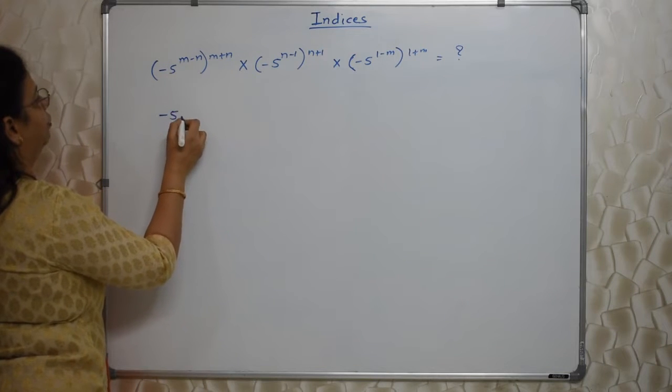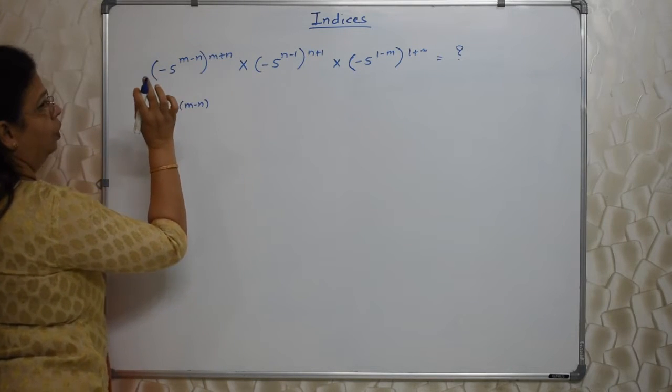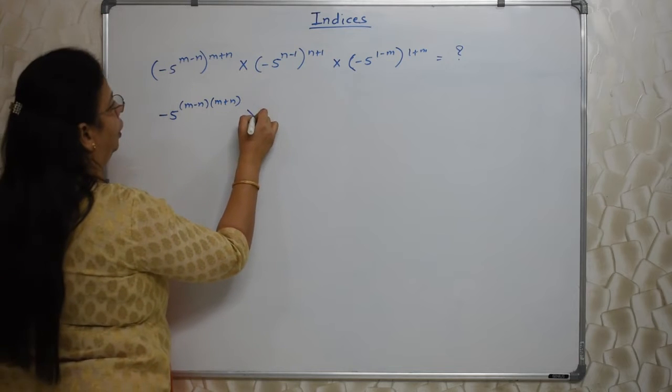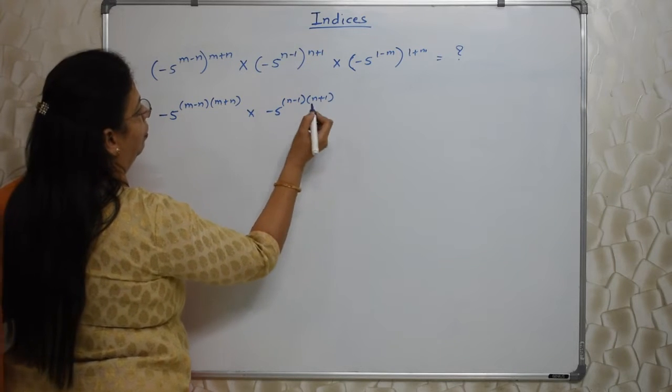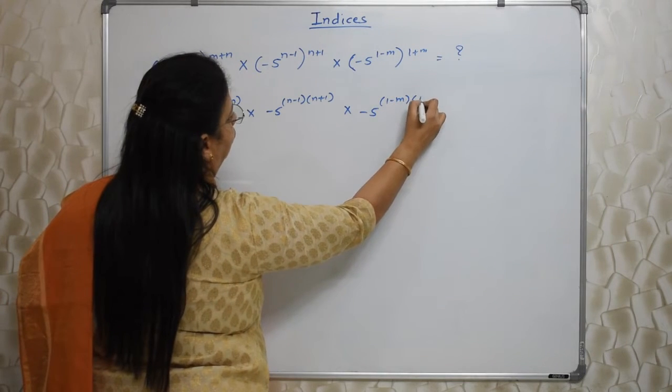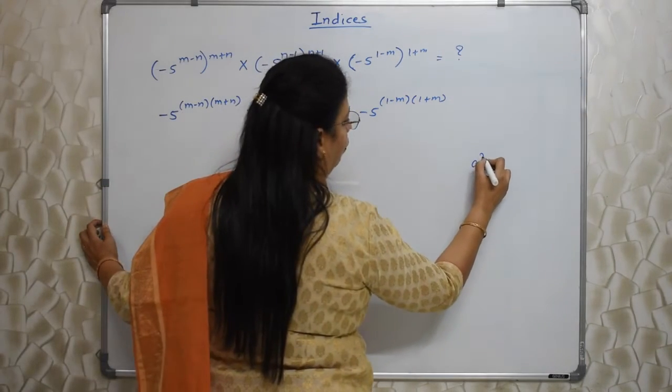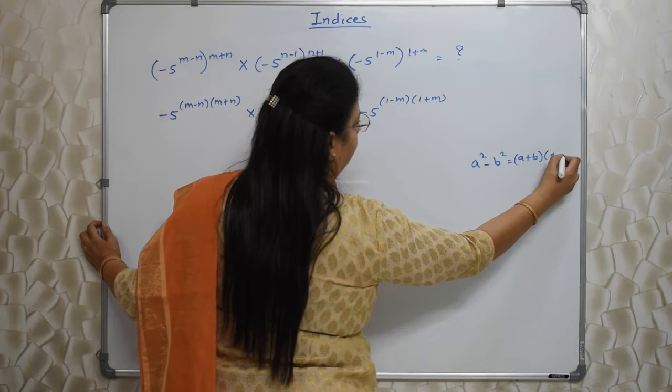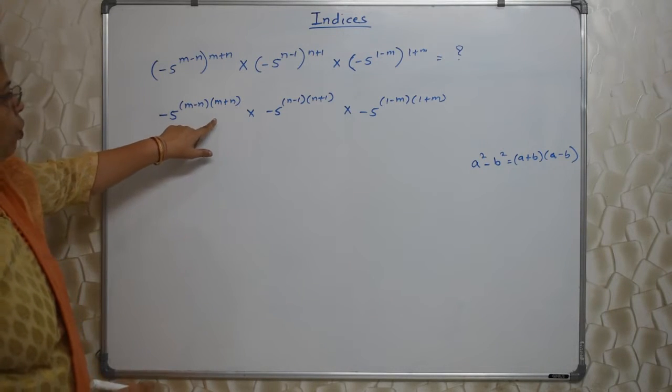Now our main job is to remove these brackets. Big brackets. (-5)^(m-n) raised to (m+n). This will be multiplied with this as per the rule of indices. Into again (-5)^(n-1) into (-5)^(1-m). And (1+m). Looking at this, immediately you should know the identities. A² - B² is equal to (A+B)(A-B).